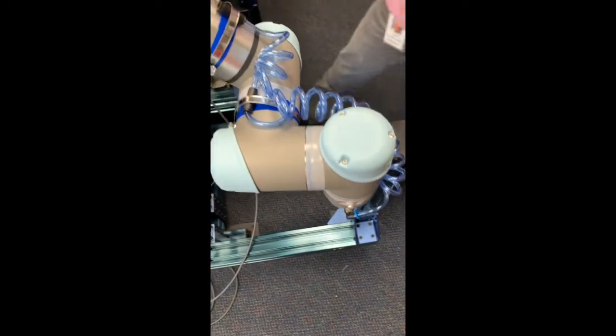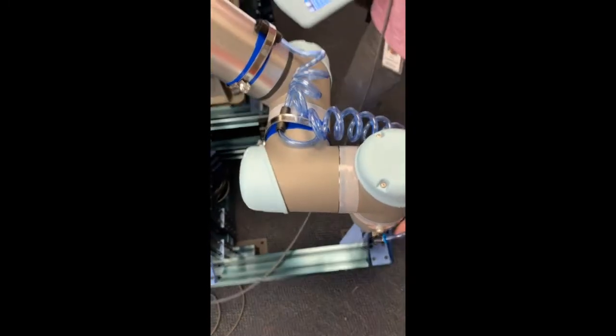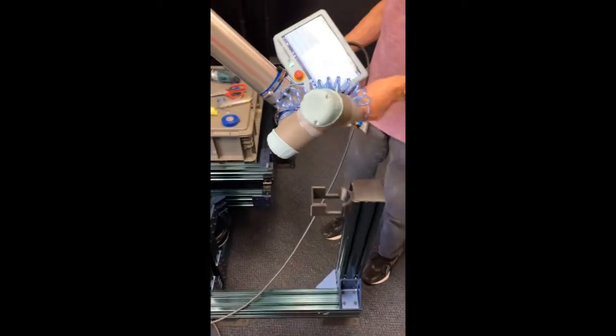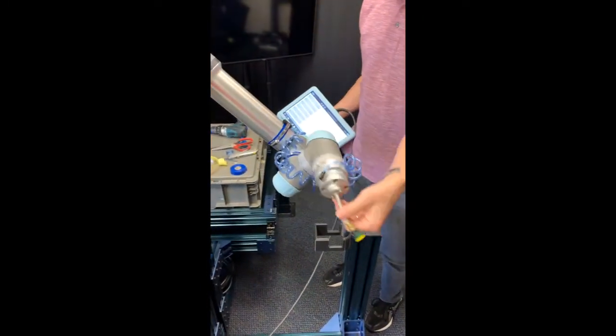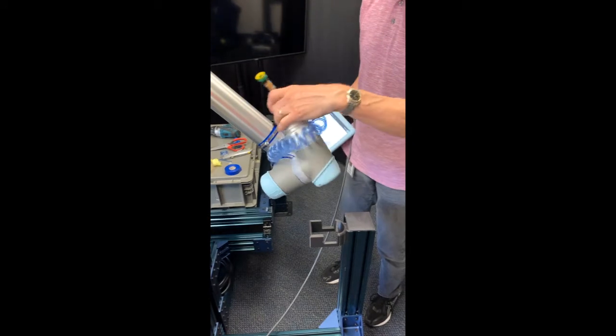So now we have a nice tight connection to the robot. You can see that it can go through all kinds of gyrations and the tube will stay close to the robot.